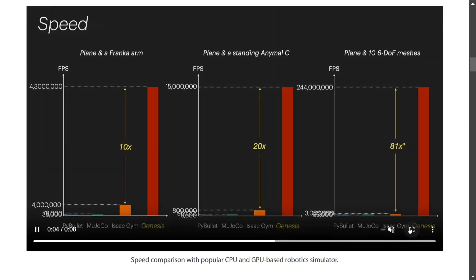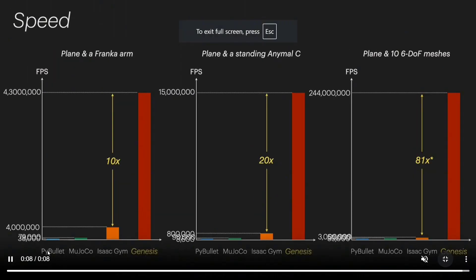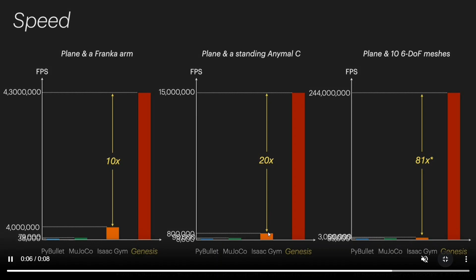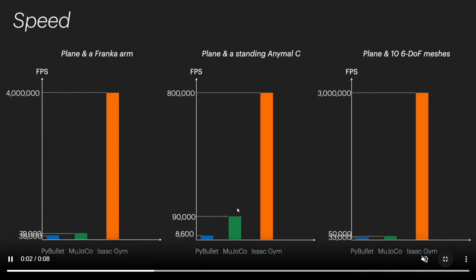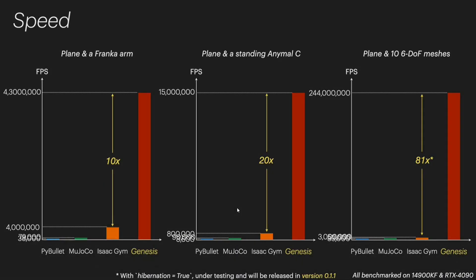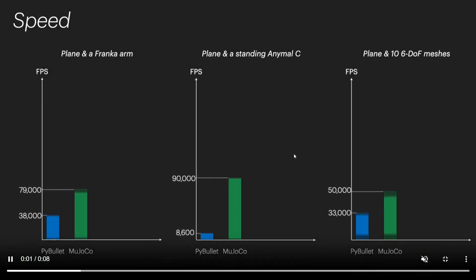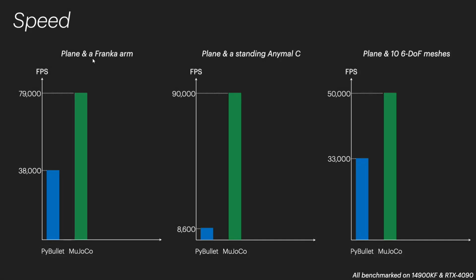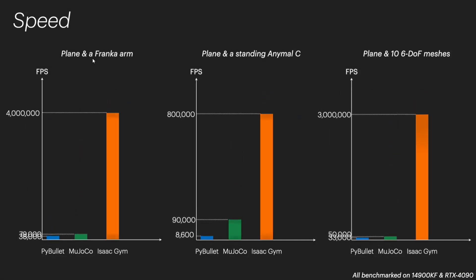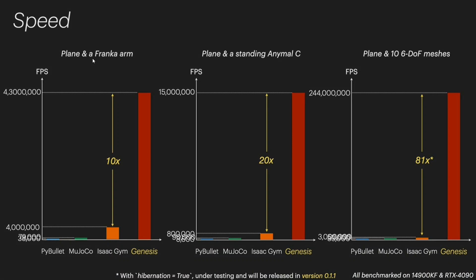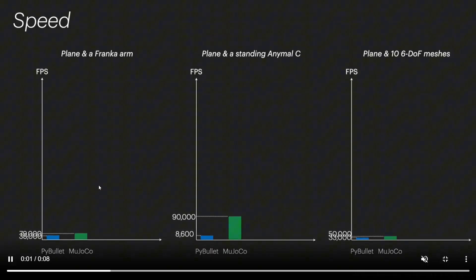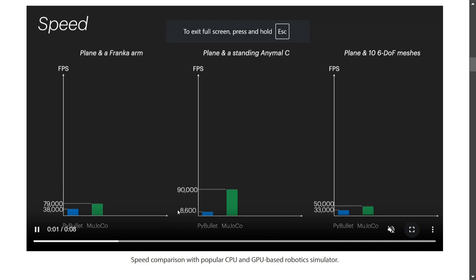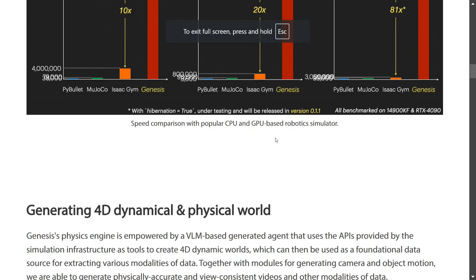First, there is a performance graph the team released which looks crazily good. Before Genesis, these were the simulation engines available for physics. The next best — Isaac Gym — is about 20 times slower than Genesis World, as you can see on the plot with the red markers. This is a great boost, shown across different simulation types: Planck, a Franka arm (a type of robotic arm), standing animal, and 6DOF meshes. The frames per second it generates are 10x, 20x, 81x times faster. It's killing it — a speed comparison across popular CPU and GPU based robotic simulators.